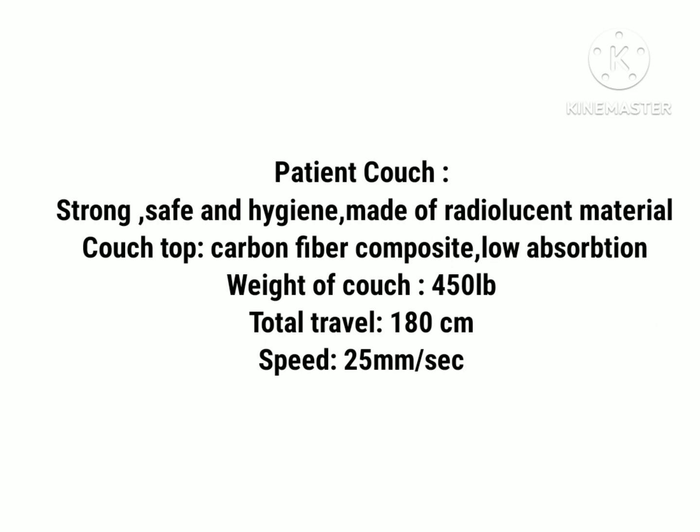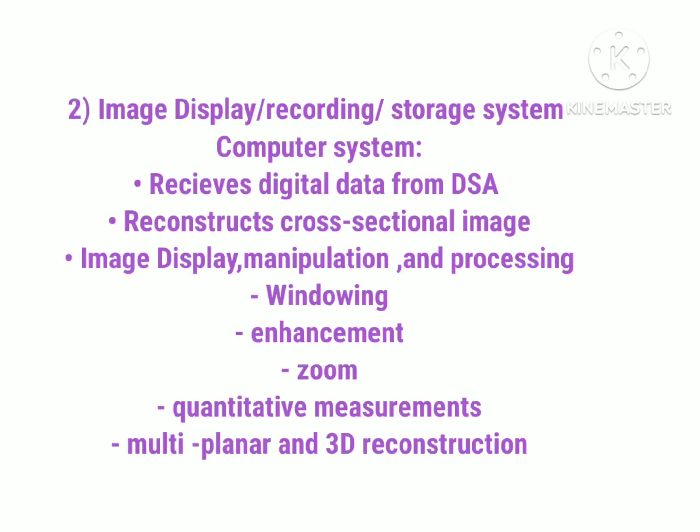The second component present in the scanner room and included in the imaging system is the patient couch — the table on which the patient is placed for scanning. This patient couch should be strong, safe, and hygienic, and should be made of radiolucent material. The couch top is made of carbon fiber so that there is low absorption of x-rays. Its weight capacity is 450 pounds, total travel is 180 centimeters, and its speed is 25 mm per second.